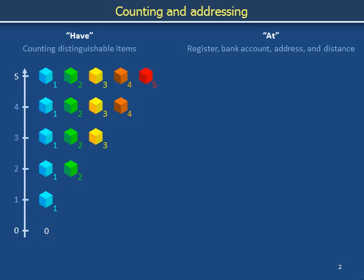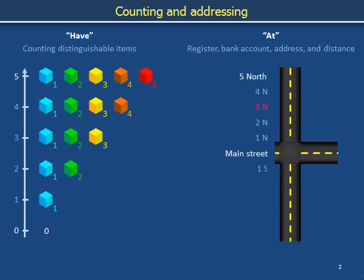You are also familiar with the idea that numbers mean 'at.' By labeling the center street Main Street, and then numbering blocks in sequence to the north and to the south, we can say that we are at 2 south, the hospital is at 3 north, and the bank is at 4 south. We don't mean that the hospital has 3 somethings or that the bank has 4 somethings in hand. We are referring merely to geography.